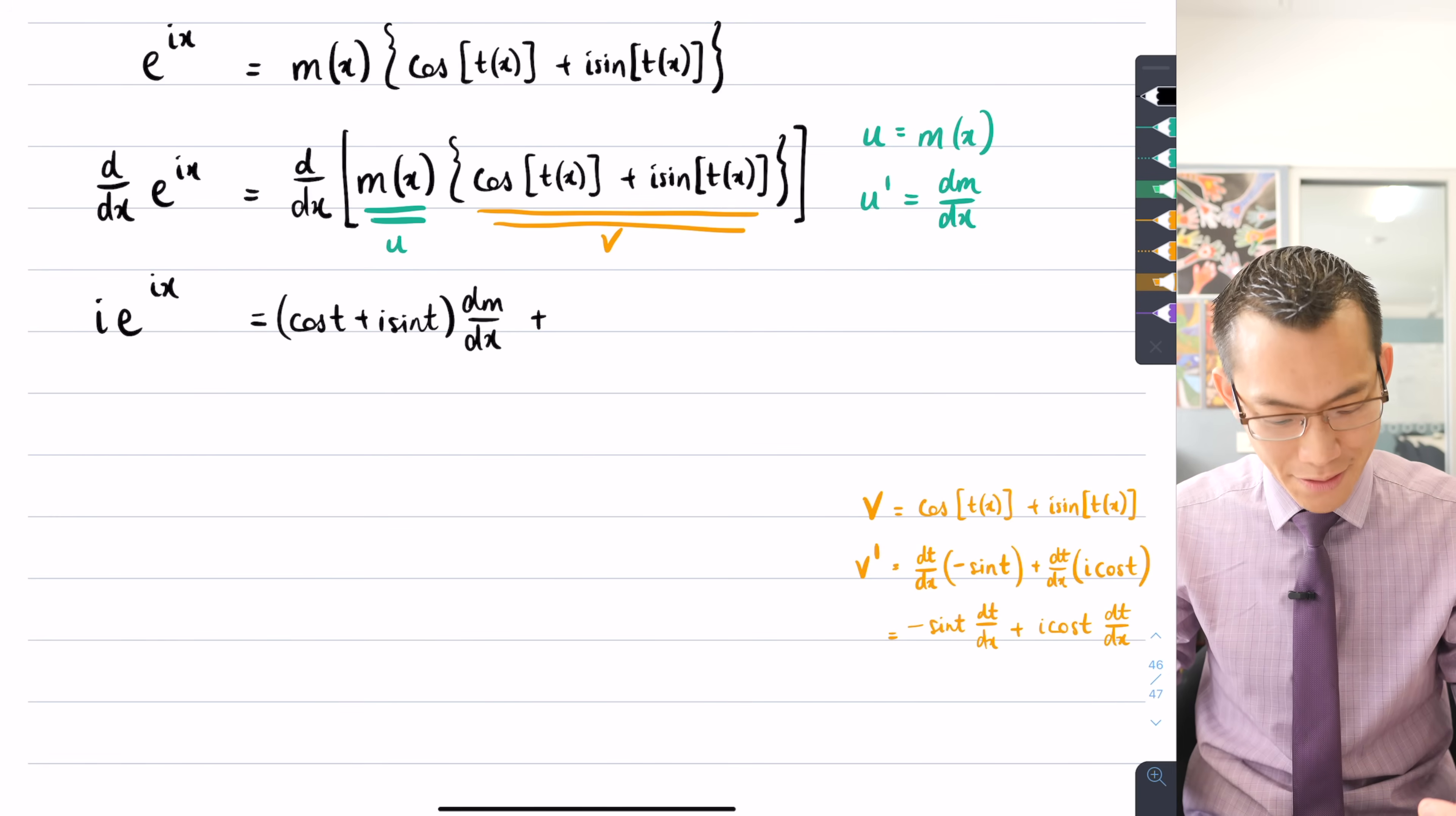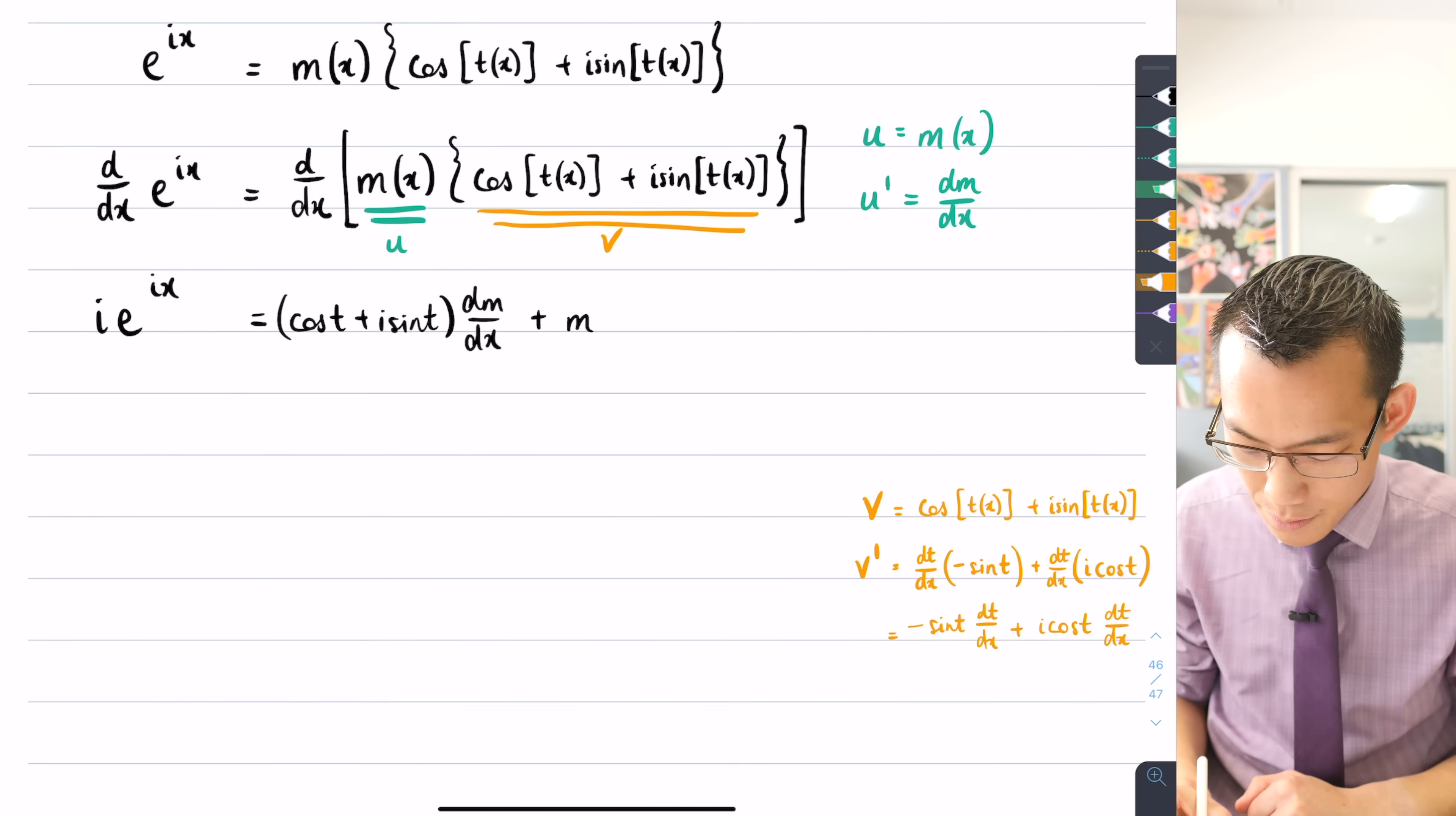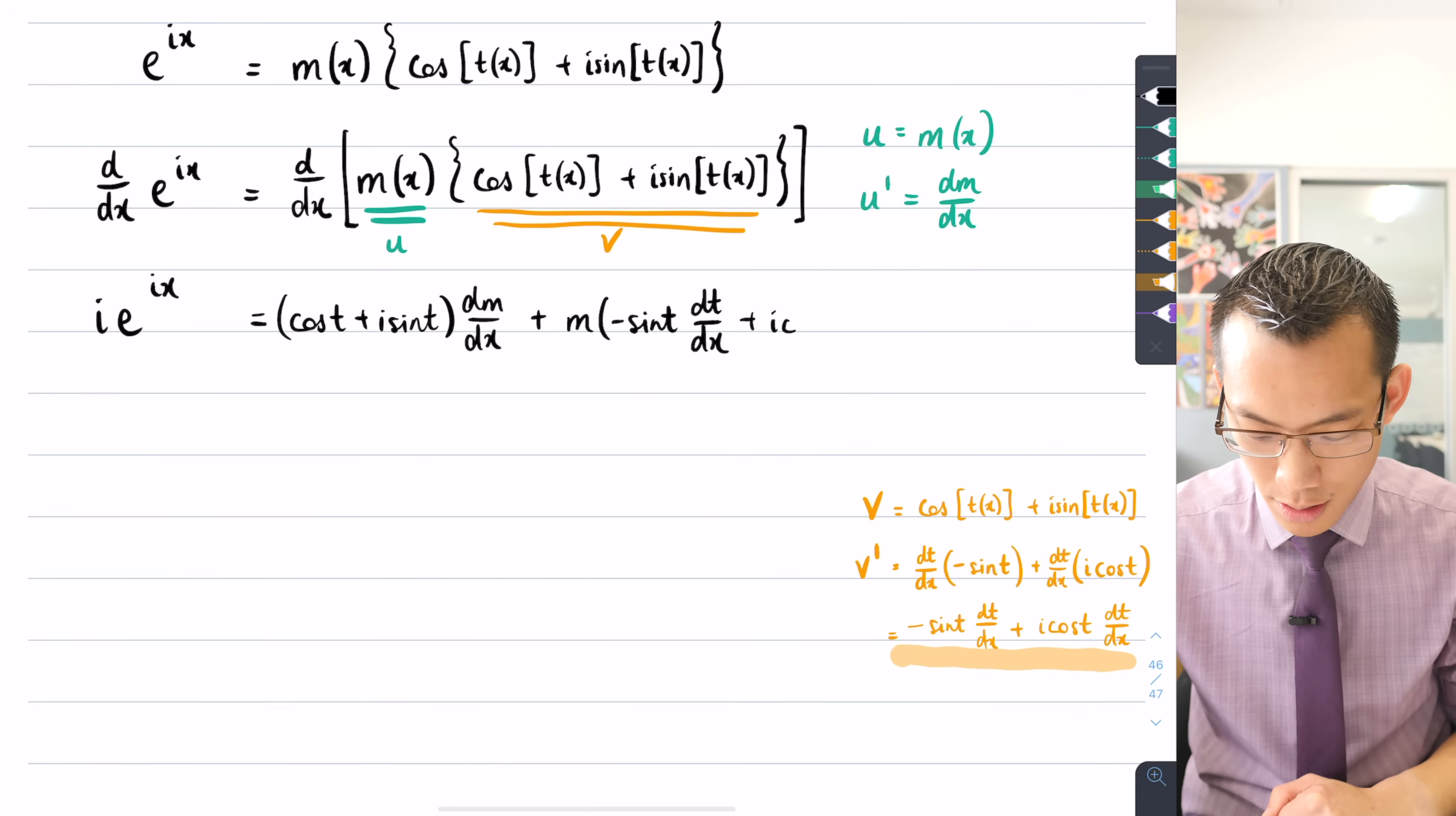So it's just m, that's u, and then the v' was that very long awkward thing that I wrote down here. This is my v'. So what have we got here? I've got minus sine t dt/dx plus i cos t dt/dx.